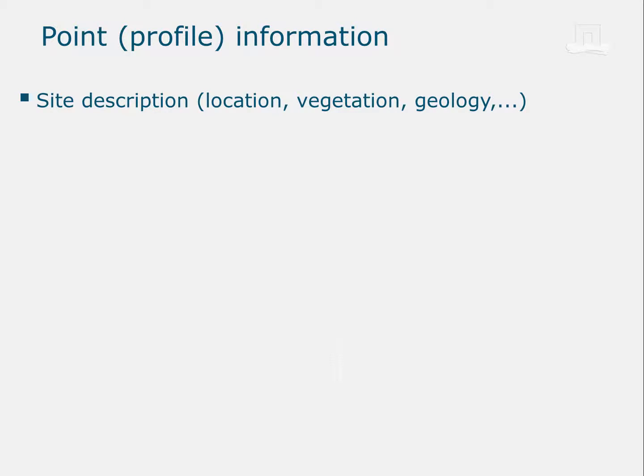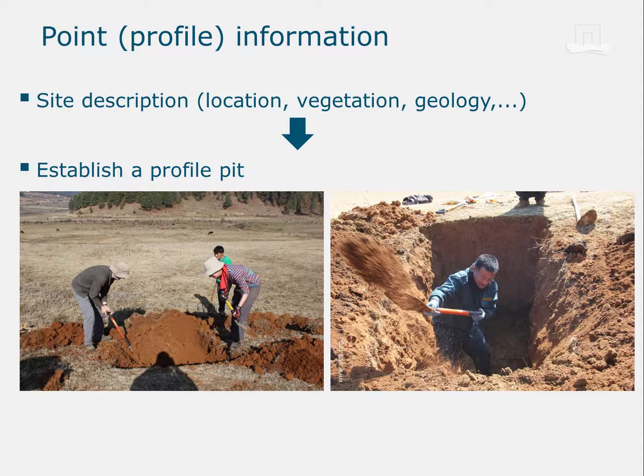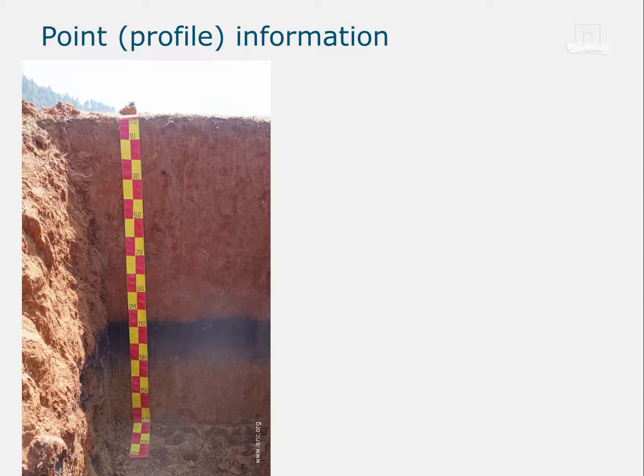But how do we start to generate and collect soil information? Let's first look at what we call point or profile information. This is where you get your hands dirty. You go to a spot and take notes on the site itself, like the vegetation, information from a geological map, and so on. Then you start digging to make a soil profile pit. Sometimes you have to dig a lot. But in the end, you will have a beautiful soil profile which you can start describing.